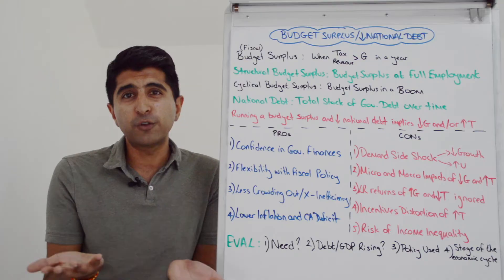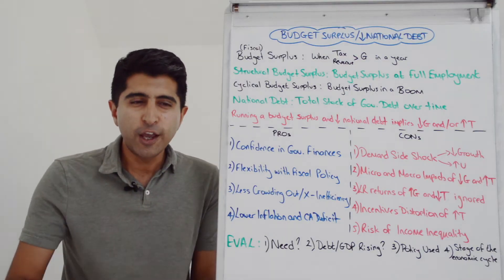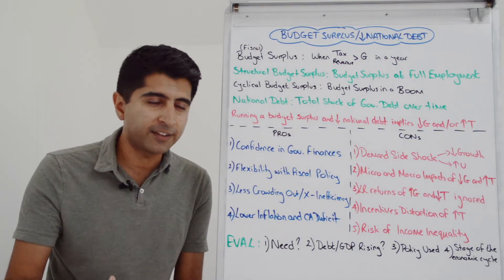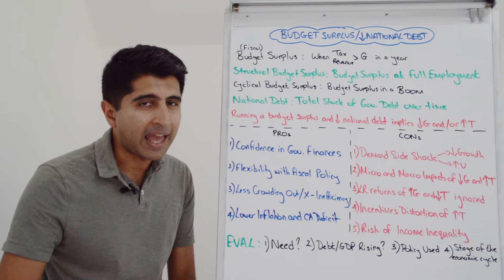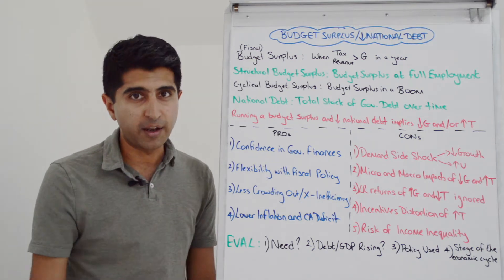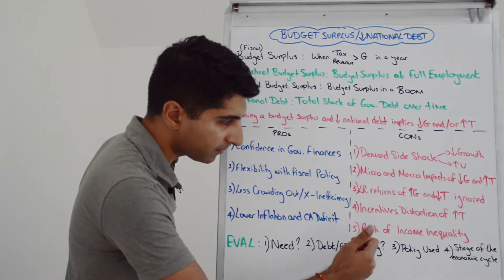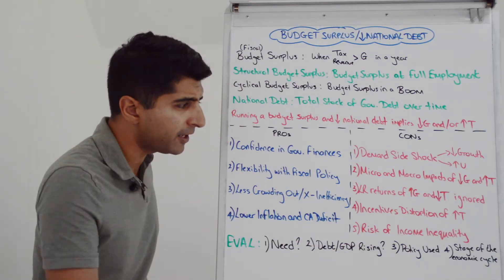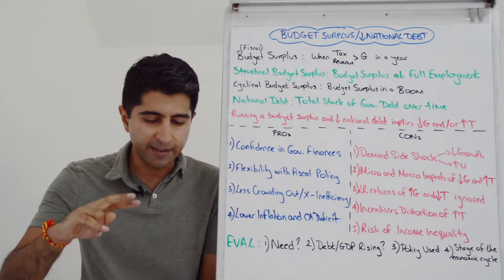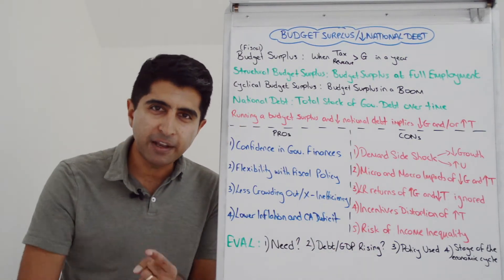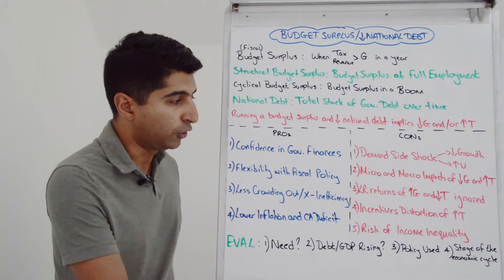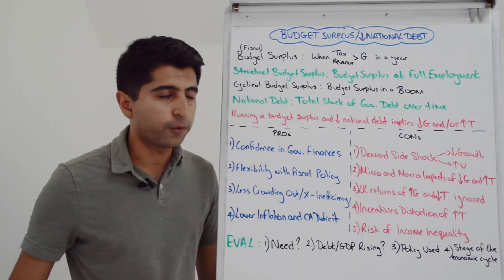If you raise corporation tax, you reduce the incentive for private firms to invest — bad news for long-run tax revenues and for the productive capacity of the economy. Some of these policies can also risk increasing income inequality if government spending on benefits is cut or regressive taxation goes up. Not a desirable consequence.